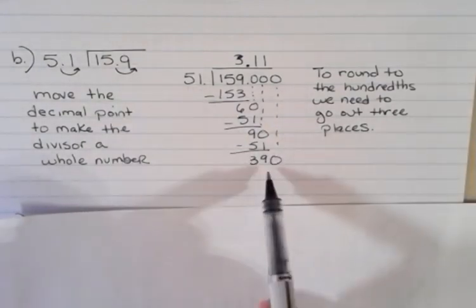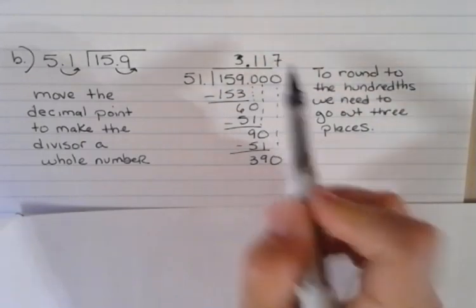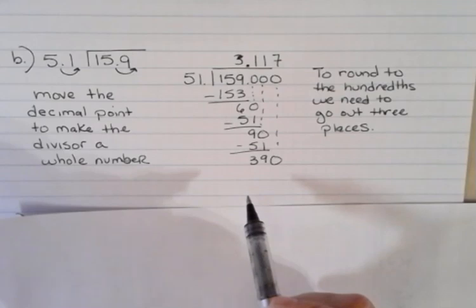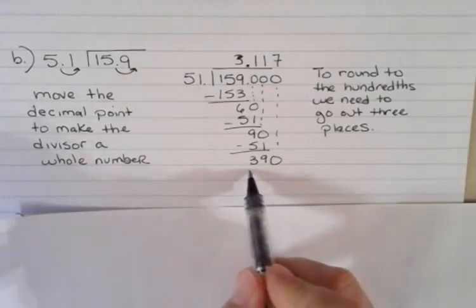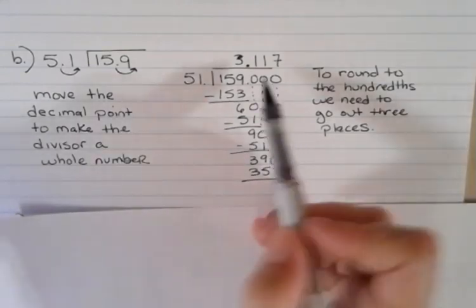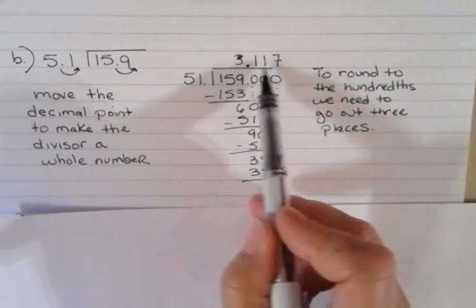90 minus 51 is 39, and then I bring down that final zero. How many times does 51 go into 390? Well, it turns out that it goes seven times. Seven times 51 is 357.